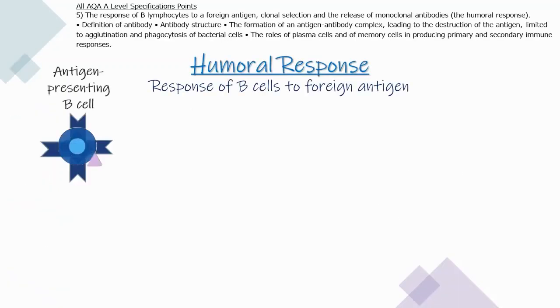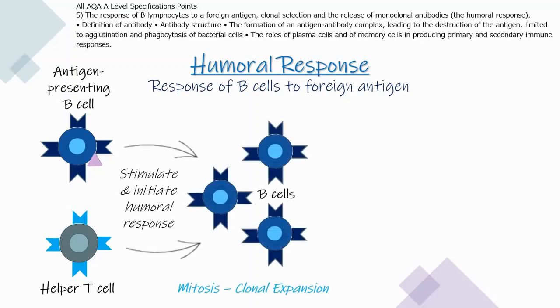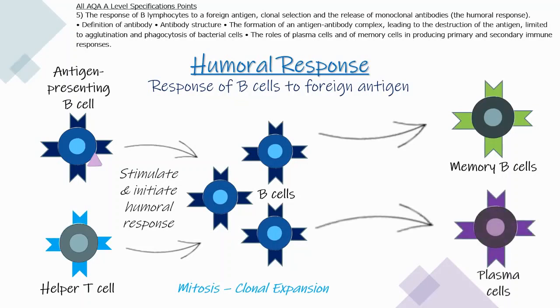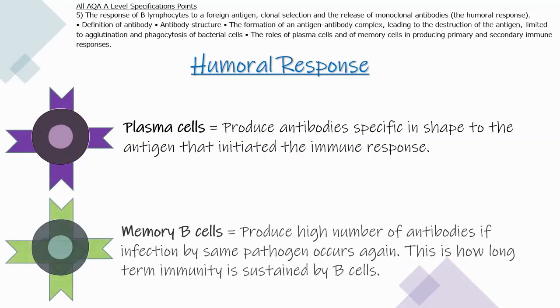The humoral response is the response of B cells to a foreign antigen. An antigen-presenting B cell and a helper T cell both stimulate and initiate the humoral response, causing B cells to be cloned by mitosis — also called clonal expansion. These then differentiate into memory B cells and plasma cells. Plasma cells produce antibodies specific in shape to the antigen that initiated the immune response, while memory B cells produce large numbers of antibodies rapidly if the individual is infected by the same pathogen again, sustaining long-term immunity.